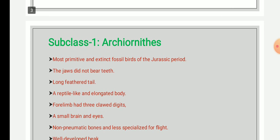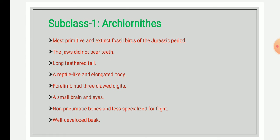We will start with subclass Archaeornithes. As already mentioned, Archaeornithes are the most primitive and extinct fossil birds, found during the Jurassic period. Their jaws bear teeth and they had a long feathered tail. They had a reptile-like elongated body.